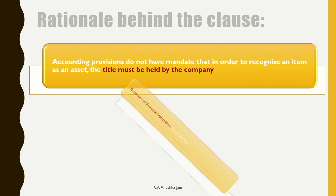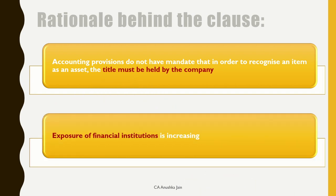Another rationale for such disclosure is that the exposure of financial institutions is increasing. Banks jo loan deeti hai, to wo ratio analysis karti hai, jo ki financial statements par based hote hai. Aise case mein jahan title company ke paas hi nahi hai, yeh banks ko pehle se pata hona chahiye. Aur ab yeh reporting inhein CARO mein milegi.